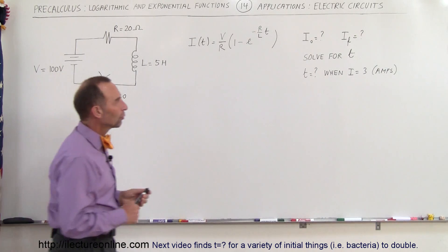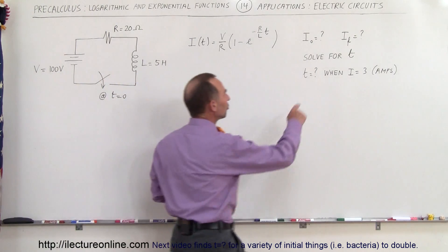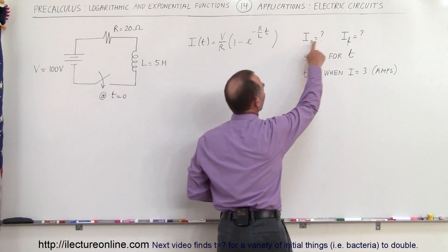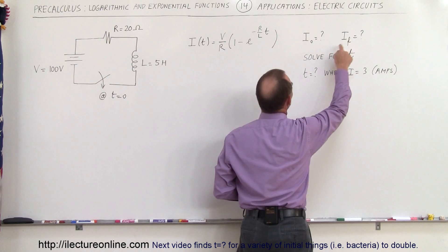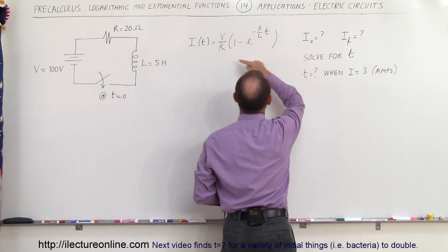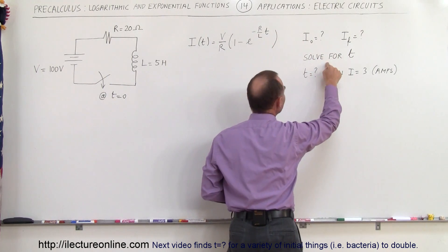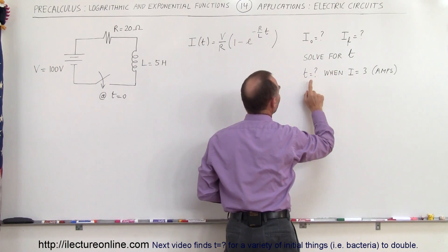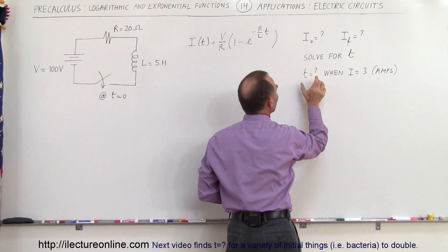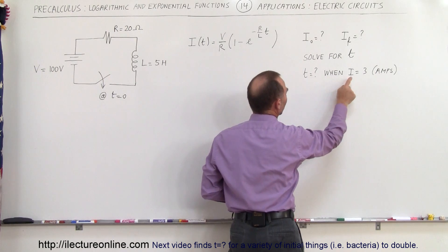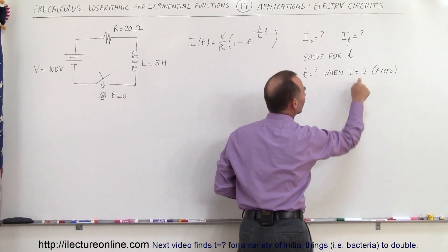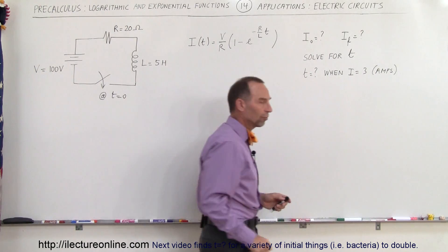We're going to find the initial current, the final current, solve the equation for T, and then find how much time has to elapse for the current to reach 3 amps.